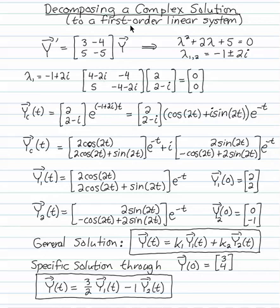The key to dealing with complex eigenvalues in a first-order linear system is to form the complex solution, complex eigenvector e to the complex eigenvalue t, and then split that complex solution into two real solutions to the system.